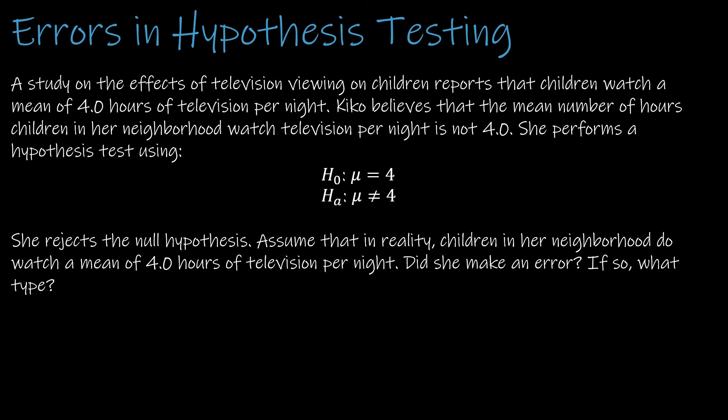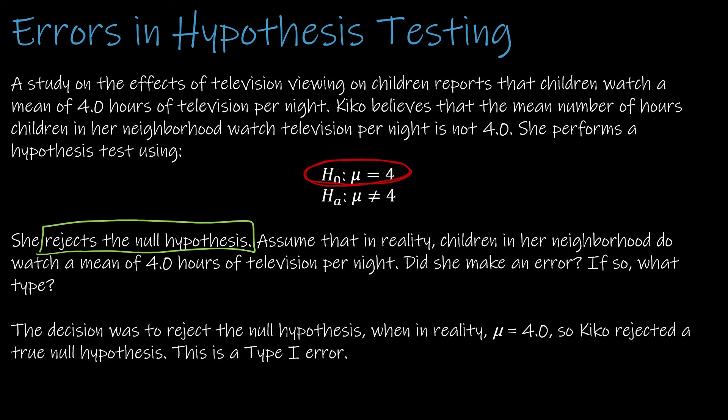The last one is for you to try on your own. We have a study on the effects of television viewing in children — children watch a mean of four hours of television per night. Kiko believes the mean number of hours children in her neighborhood watch is not four. She performs a hypothesis test using mu equals four versus not equal to four, and she concludes to reject the null hypothesis. Assume that in reality, children in her neighborhood do watch a mean of four hours per night — so the null is essentially true. Based on the fact that the evidence supports the null and she rejected it, she did in fact make an error: she rejected a true null hypothesis, which is a type one error.